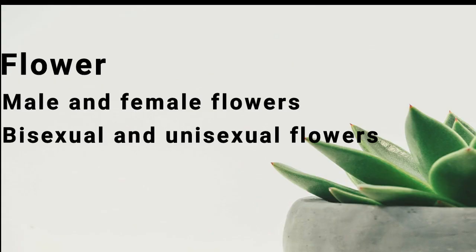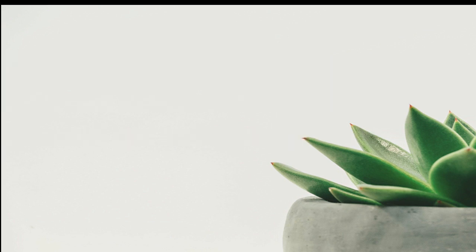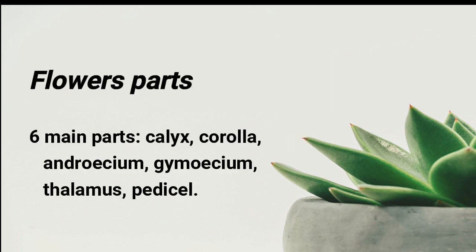Hello everybody, so today's class is on flower — male, female, bisexual, and unisexual flowers. A brief recap: flowers have six parts — calyx, corolla, androecium, gynoecium, thalamus, and pedicel — and just a brief idea on androecium and gynoecium in today's class.